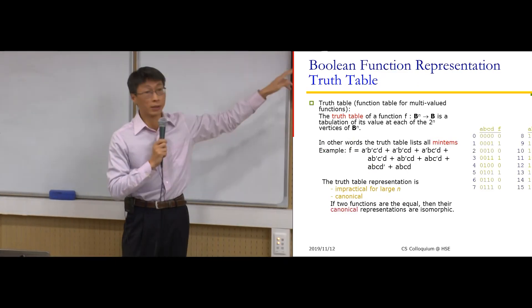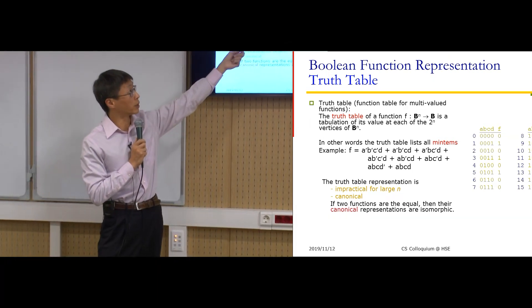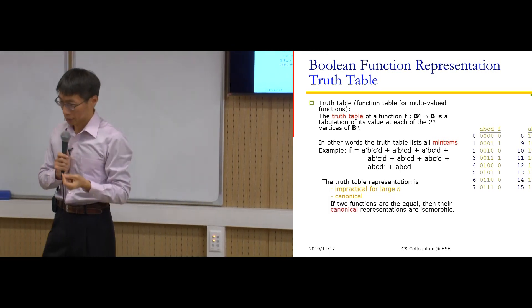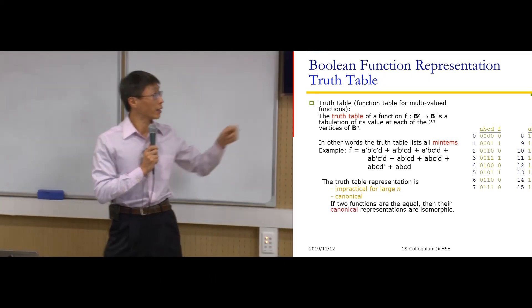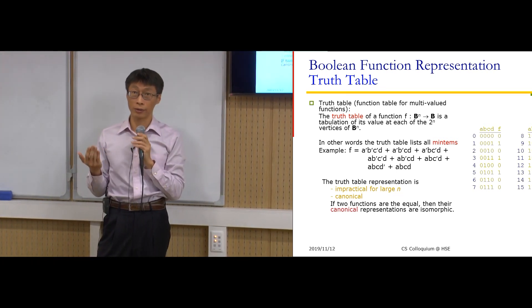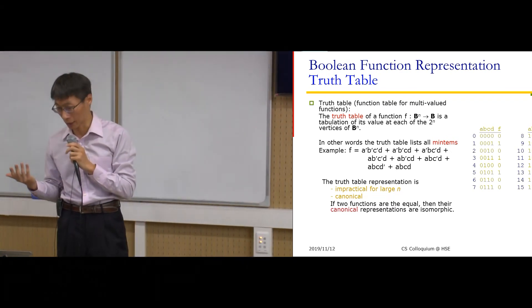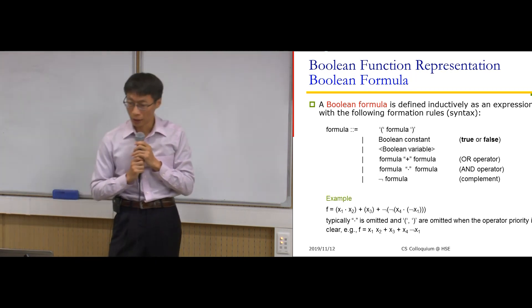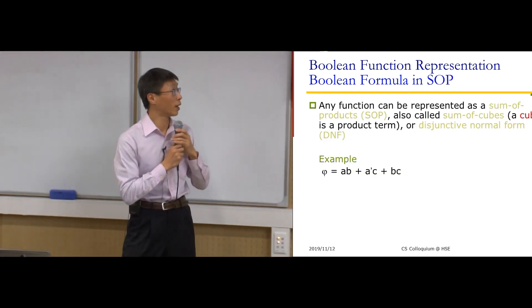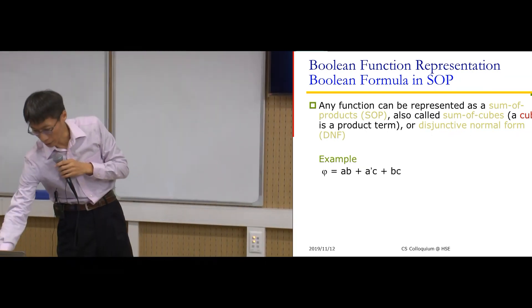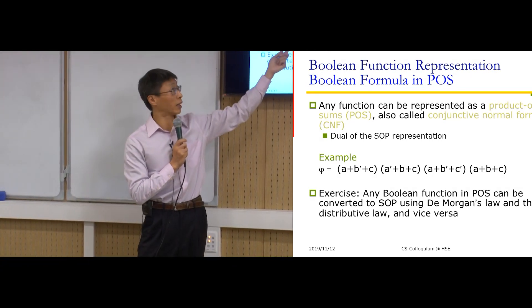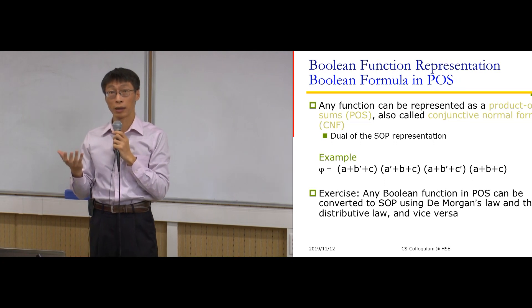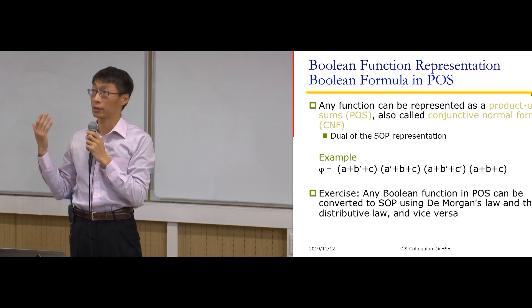Here is the truth table example. Given a Boolean function with four variables, you list all possible input assignments and determine what the output value is. It's a canonical representation, meaning two functions are identical if and only if their truth tables are the same. That uniqueness for the Boolean function representation is what we mean by canonical.